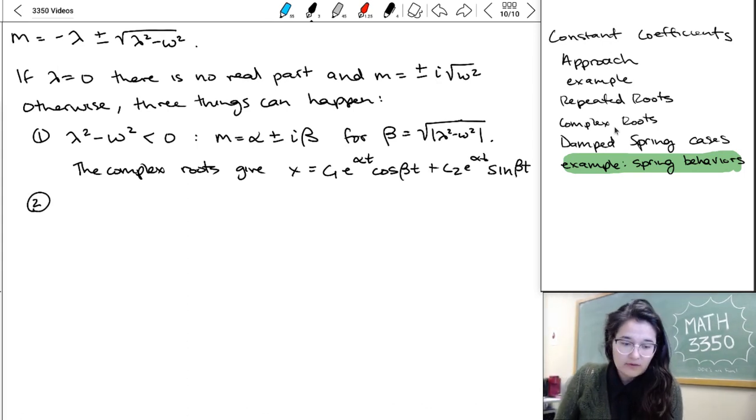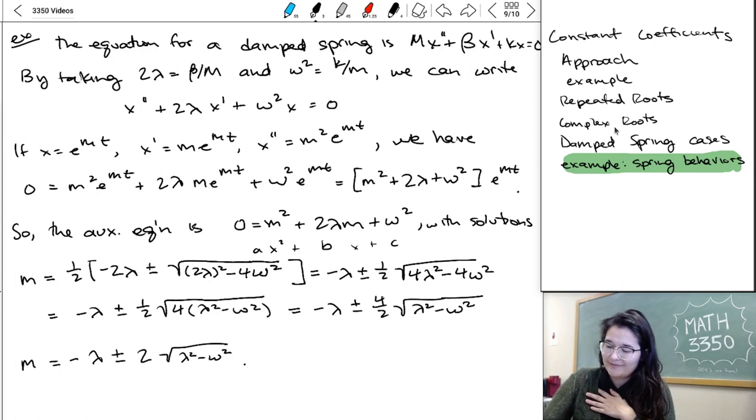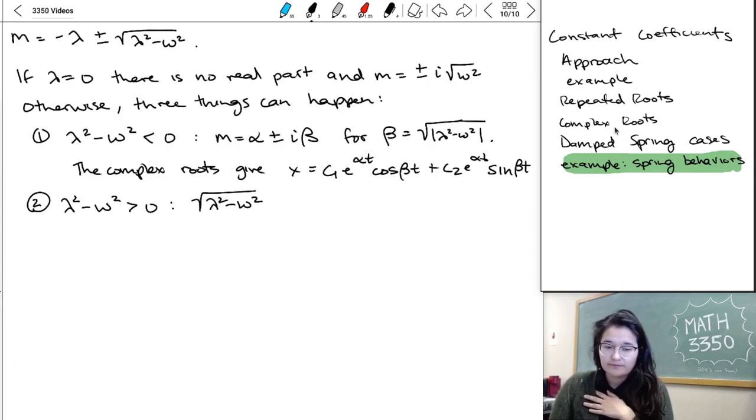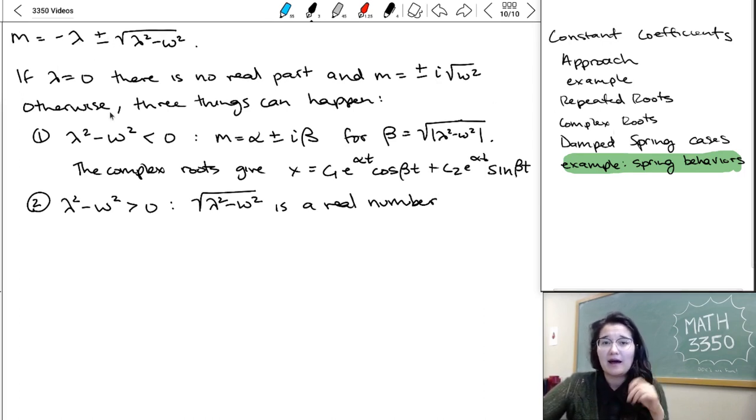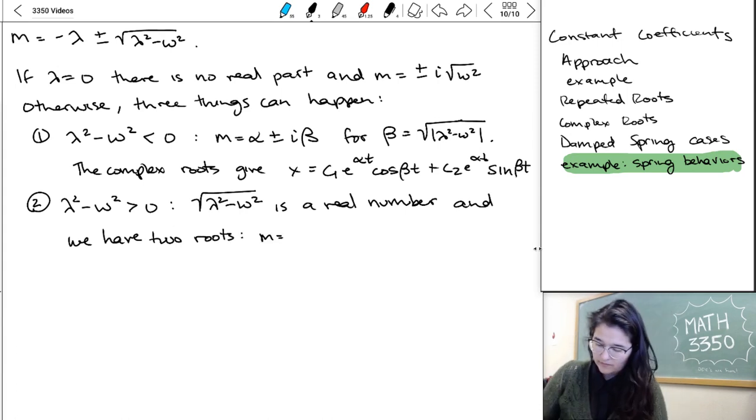And then we can consider the opposite where let's suppose lambda squared minus omega squared is positive. In that case, the thing inside the square root is positive. And what matters to us is that means it's a real number. It's a real number that we're going to assume, we assumed it's bigger than zero. So then when I take minus lambda and I add or subtract that number from it, I'm definitely going to get two different roots.